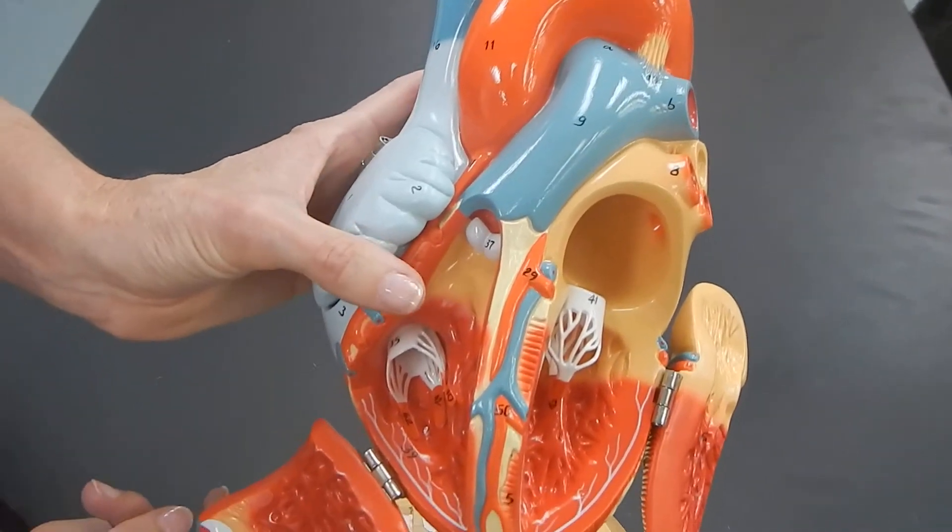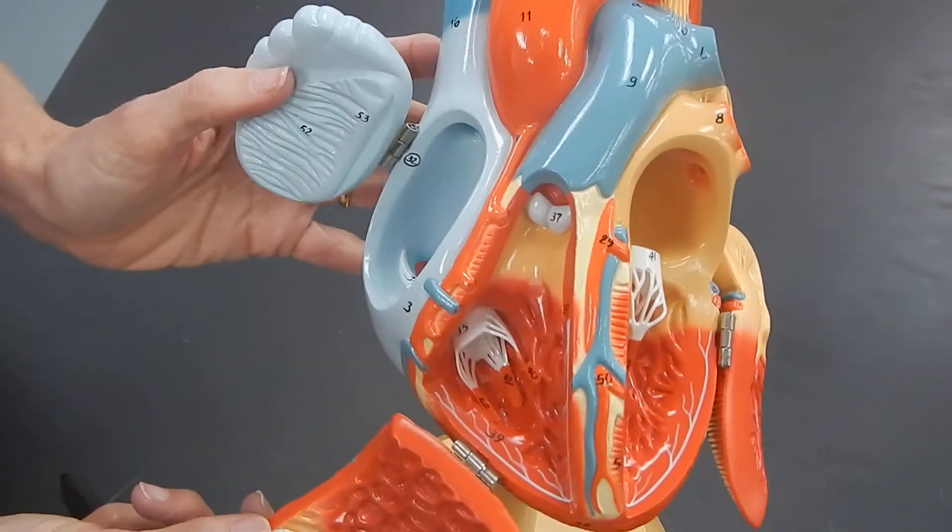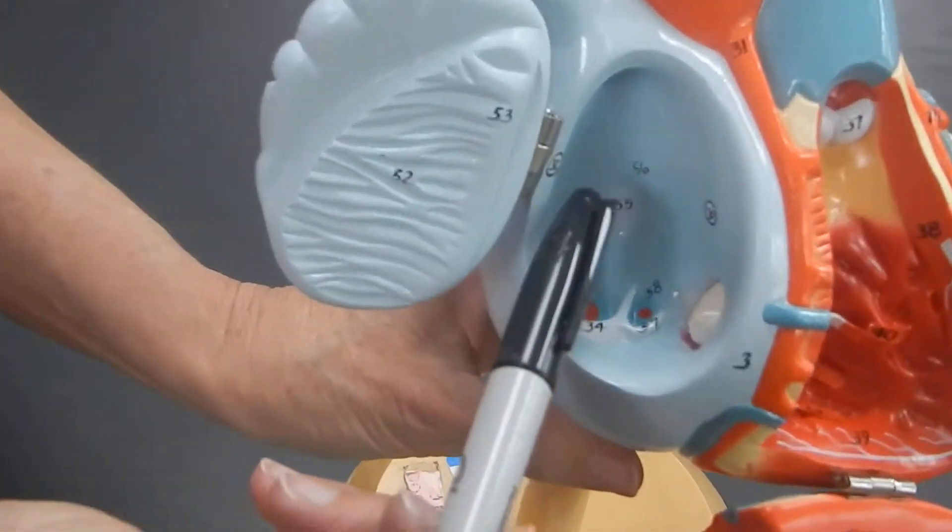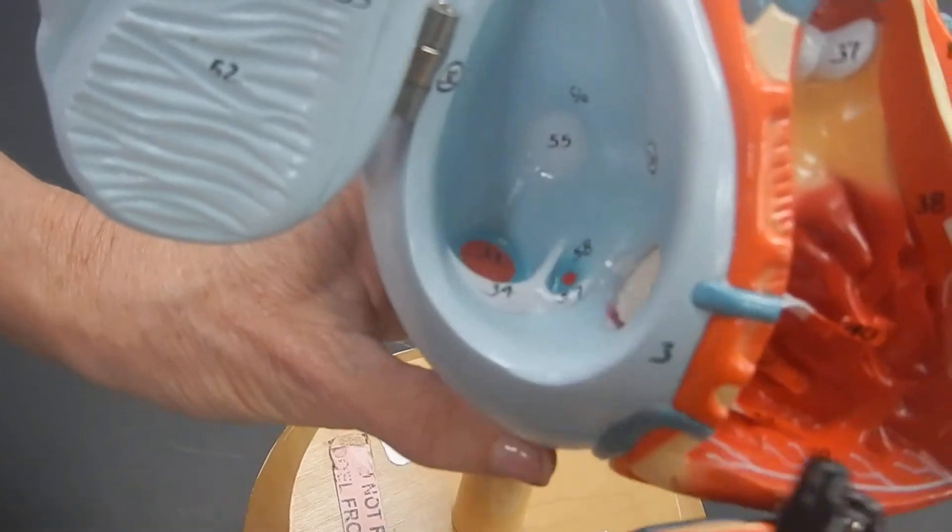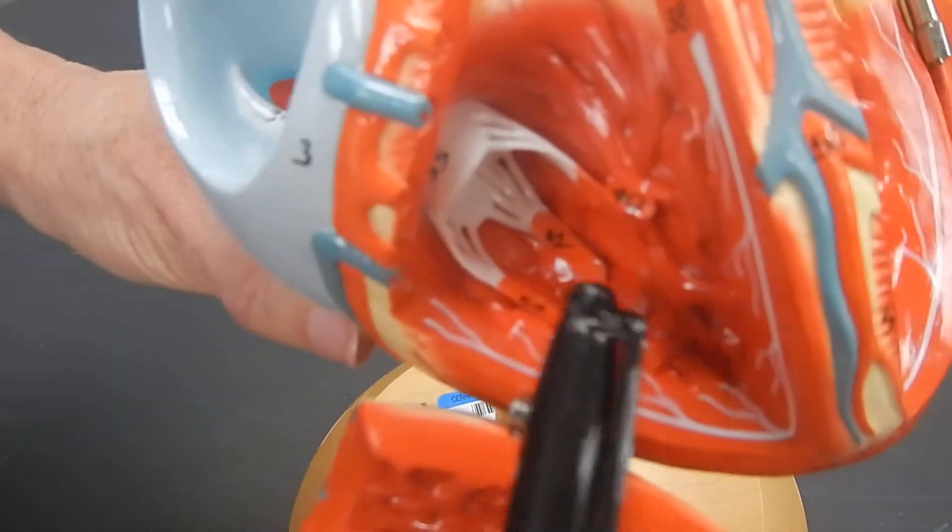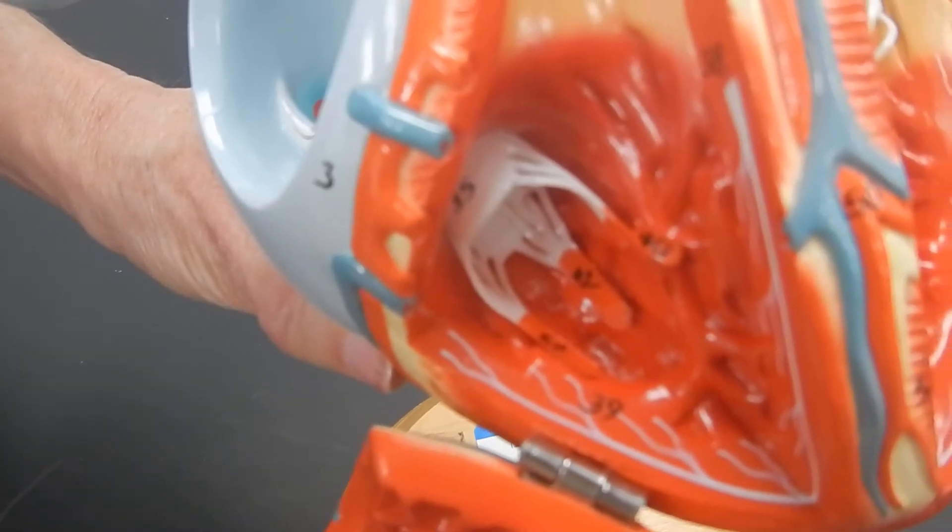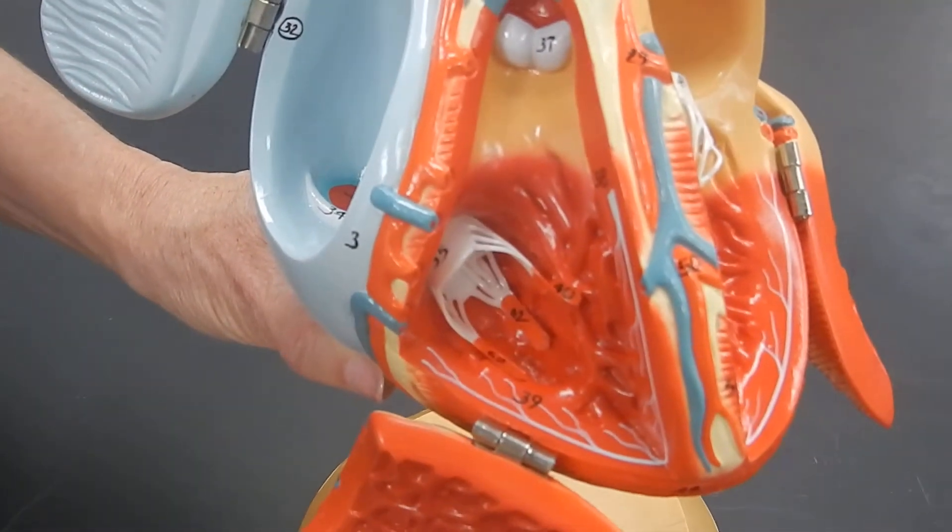Now, when it comes to understanding the heart, you need to know the names of the valves. The name of the valve between the right atrium and the right ventricle, this valve is called the tricuspid valve. This is the tricuspid valve.